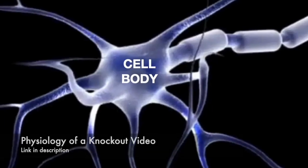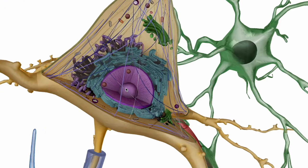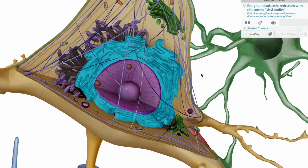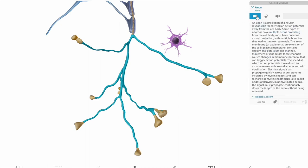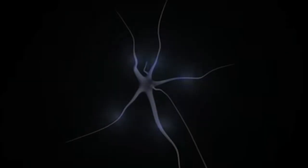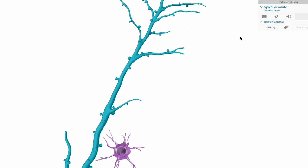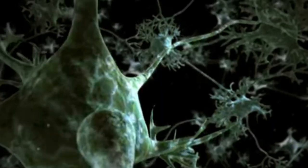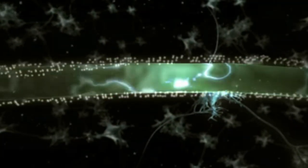Pay attention closely here. The neuron has three basic parts: the cell body, the axon, and the dendrite. The cell body controls the cell's activities and holds the genetic material. The axon is the part I really want you to remember because it's super important when it comes to understanding the mechanism of the physiology of a knockout — the axon is responsible for sending messages from the cell. And the dendrite is responsible for receiving messages from other neurons.